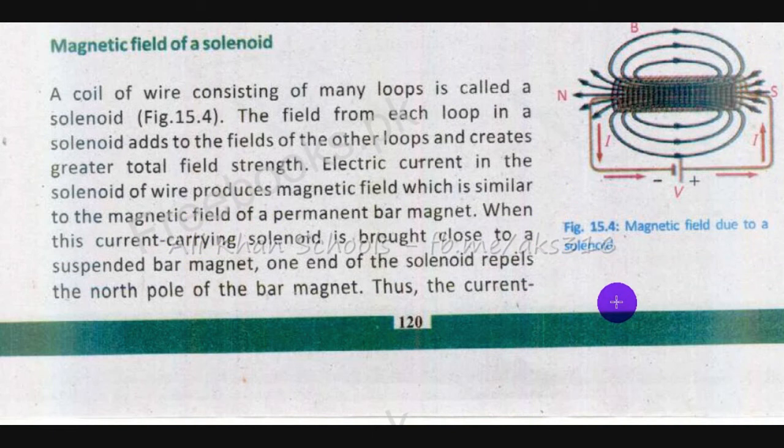Agar is suspended — matlab ek rassi ke saath usne bandh diya aur dhila chhor diya — ke jis direction mein magnetic field aaye woh us se affect ho jaye. Toh kehta hai ke jab hum iske paas le ke jaate hain toh uska jo north pole hai woh is ke south pole ki taraf aa jaata hai.